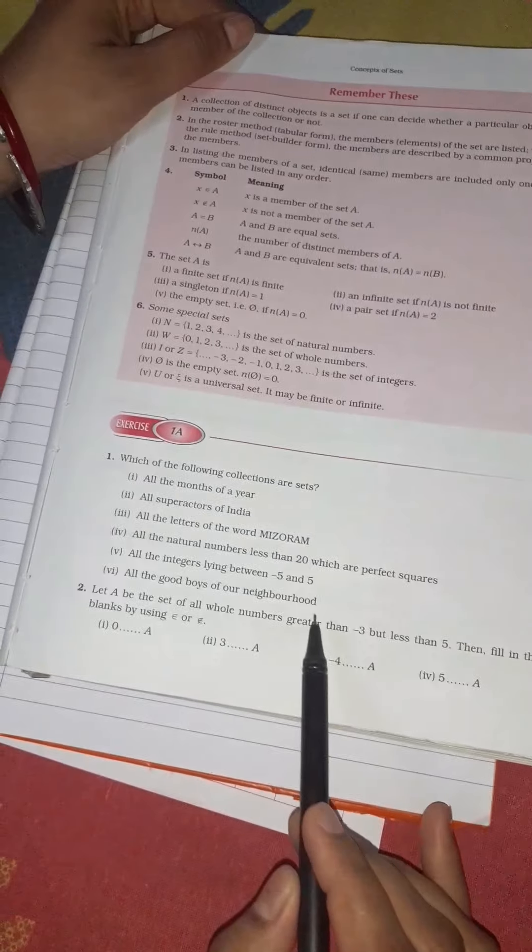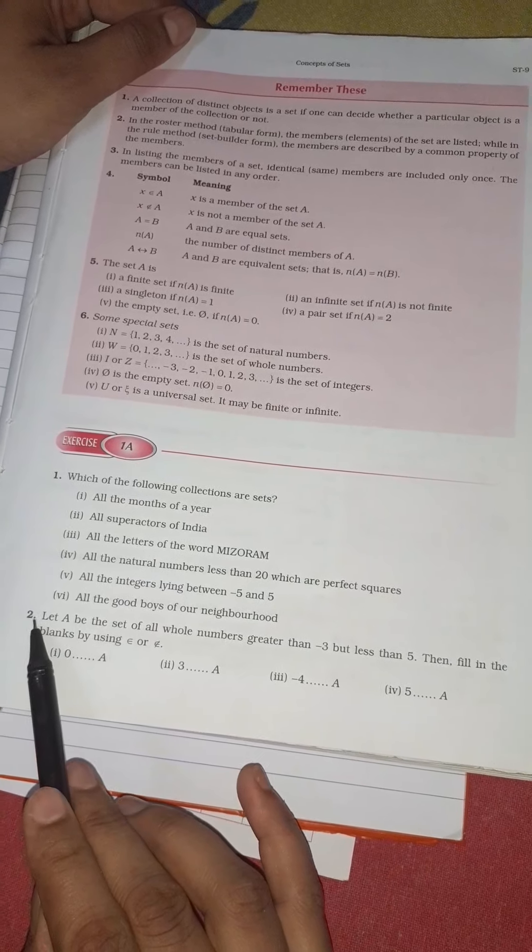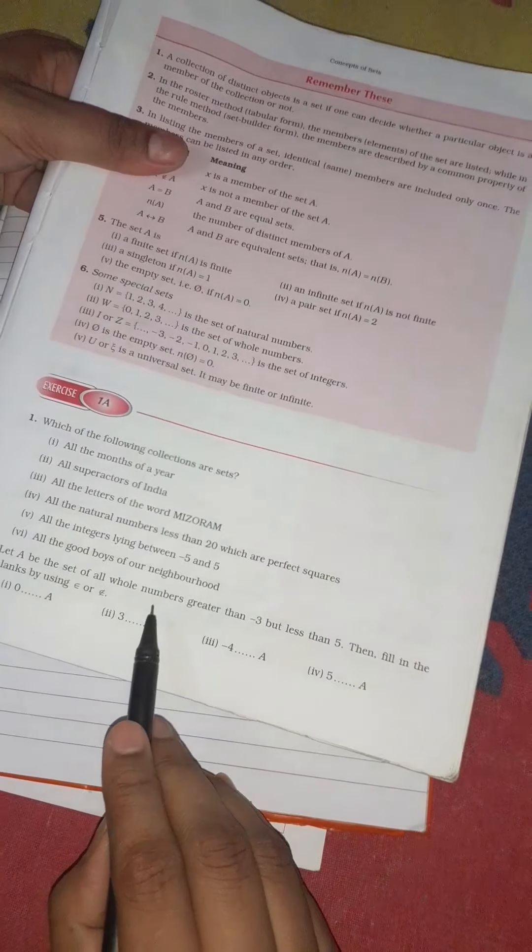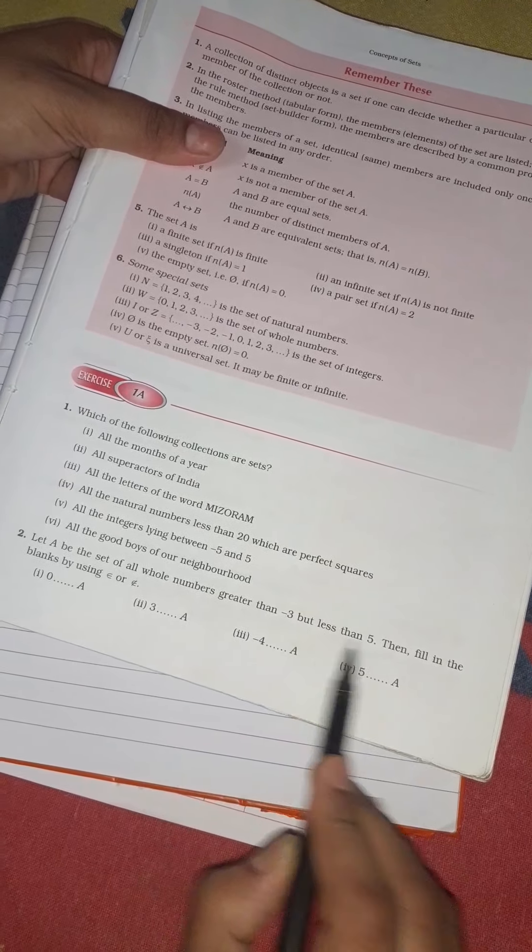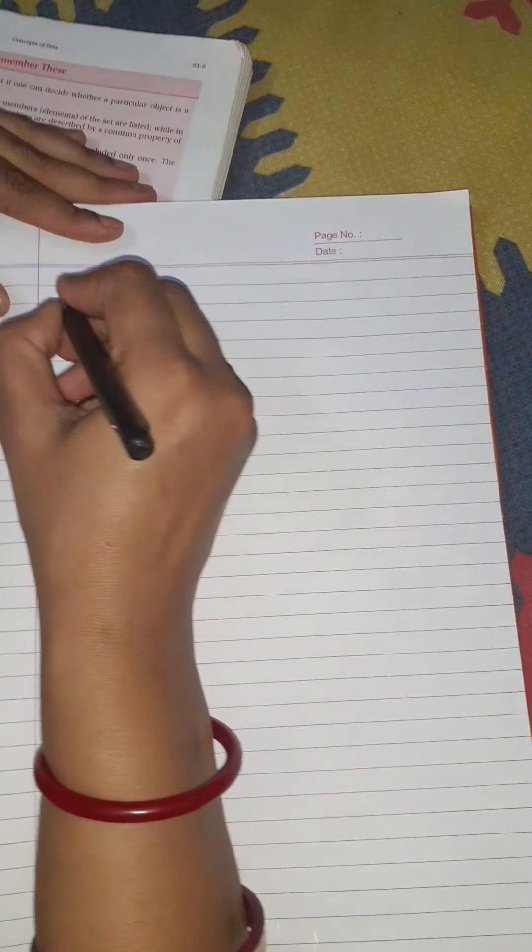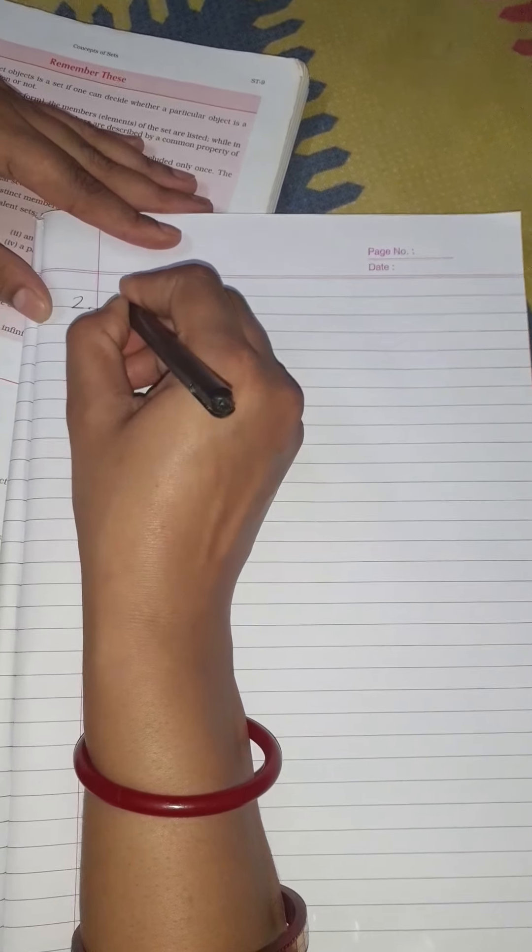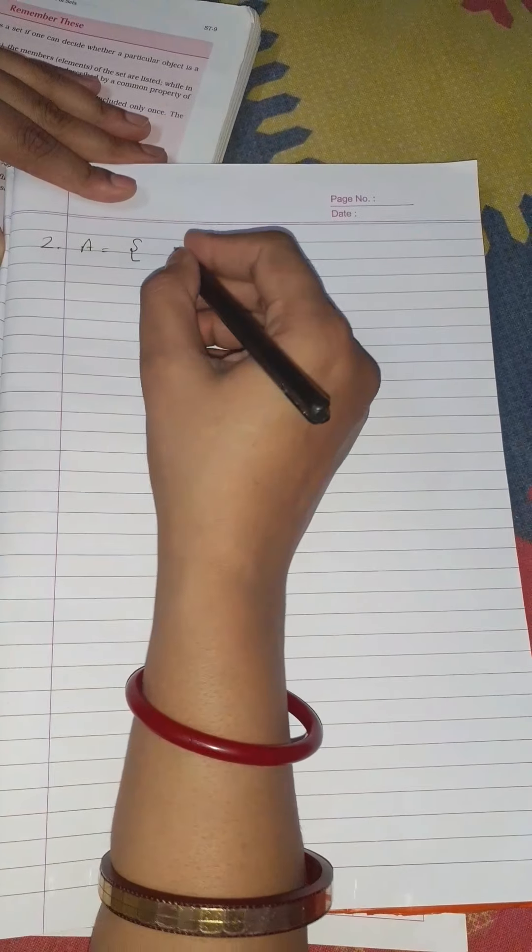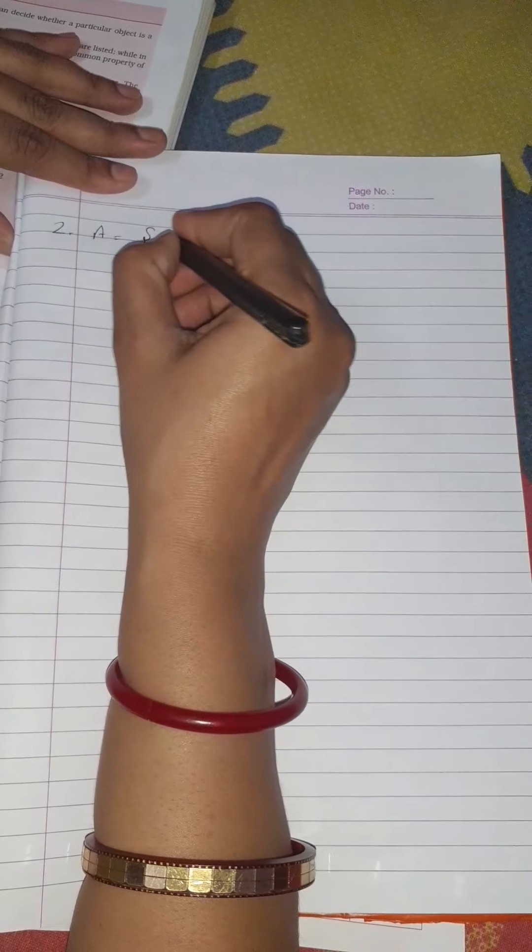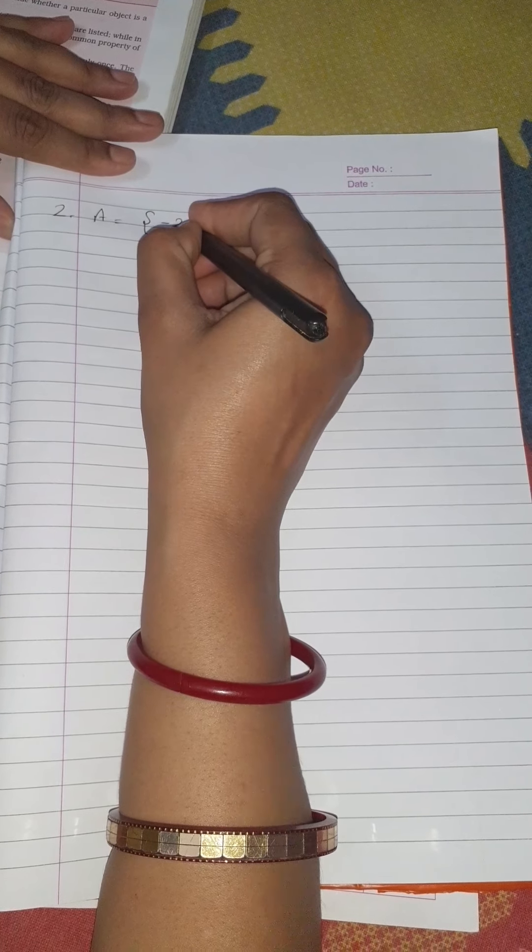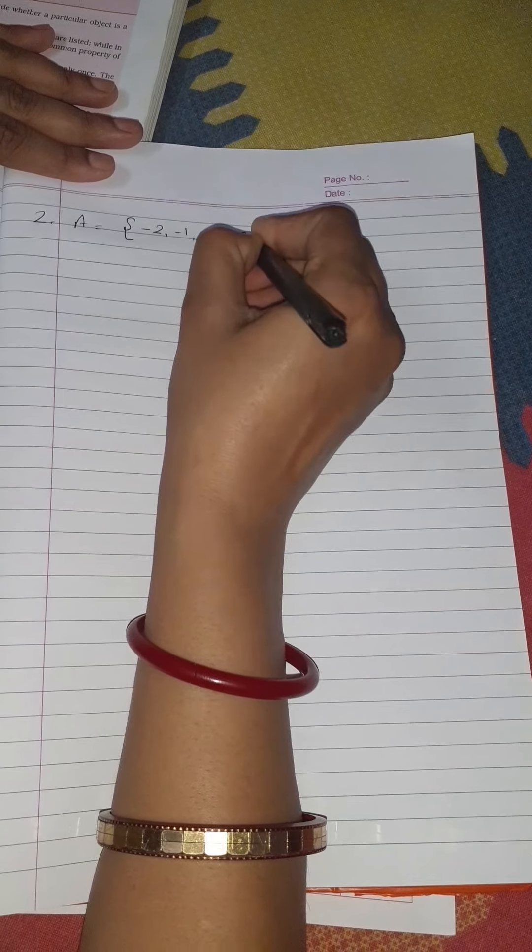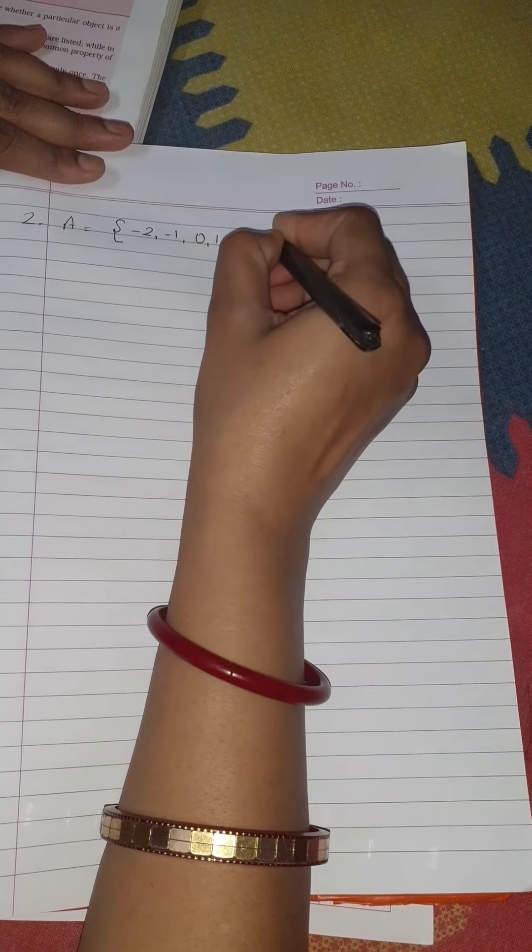Question number 2 is saying: let A be the set of all whole numbers greater than -3 but less than 5. So firstly create this set. A contains all the whole numbers that are greater than -3 but less than 5, so the elements are -2, -1, 0, 1, 2, 3, and 4.